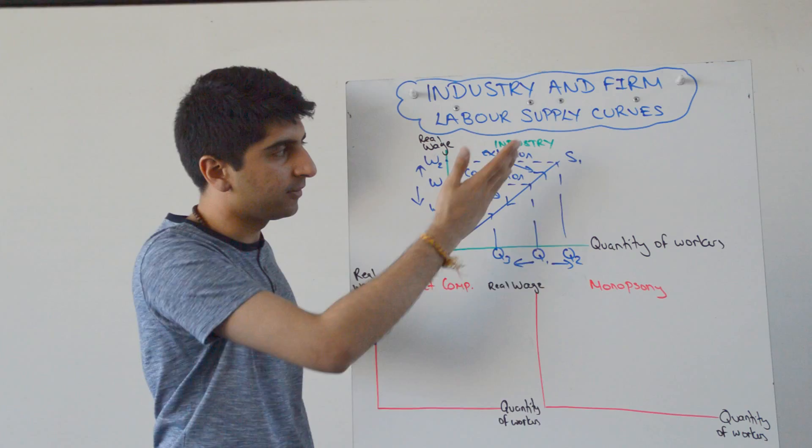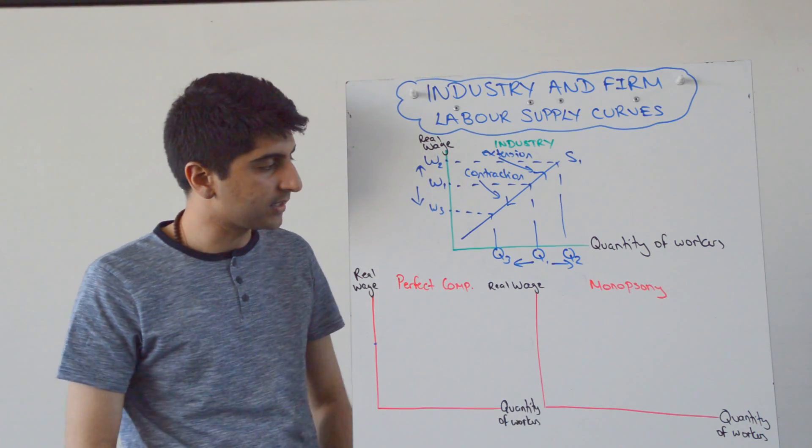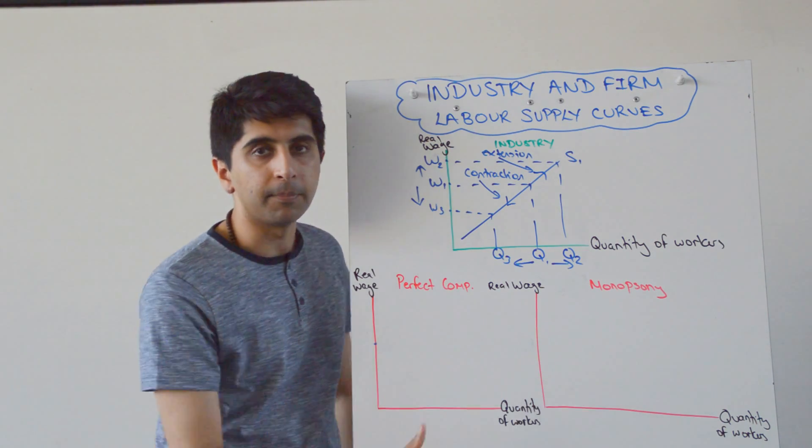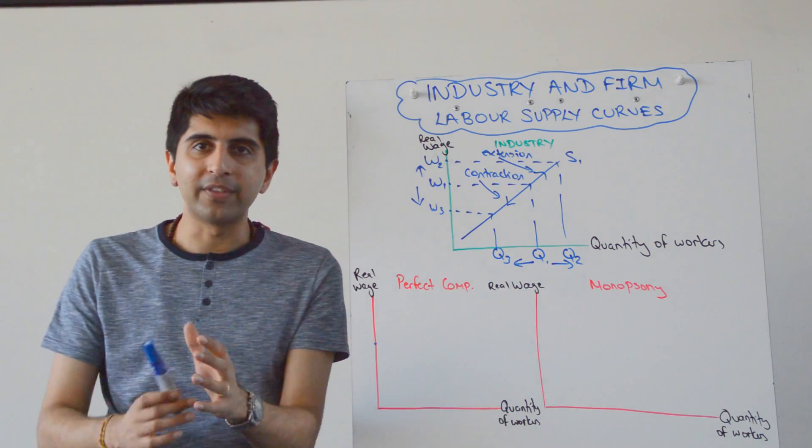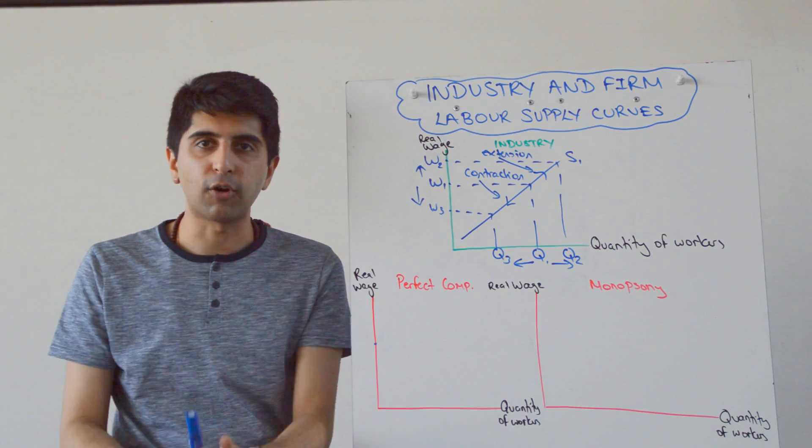That's all fine. So that's for the industry. That's for the market, the labour supply curve. You need to be able to draw like that. What about for individual firms?